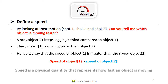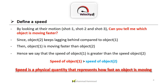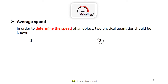The speed at which object one is moving is greater than the speed at which object two is moving. Speed is a physical quantity that represents how fast an object is moving. Now we have the average speed. In order to determine the speed of an object, two physical quantities should be known.